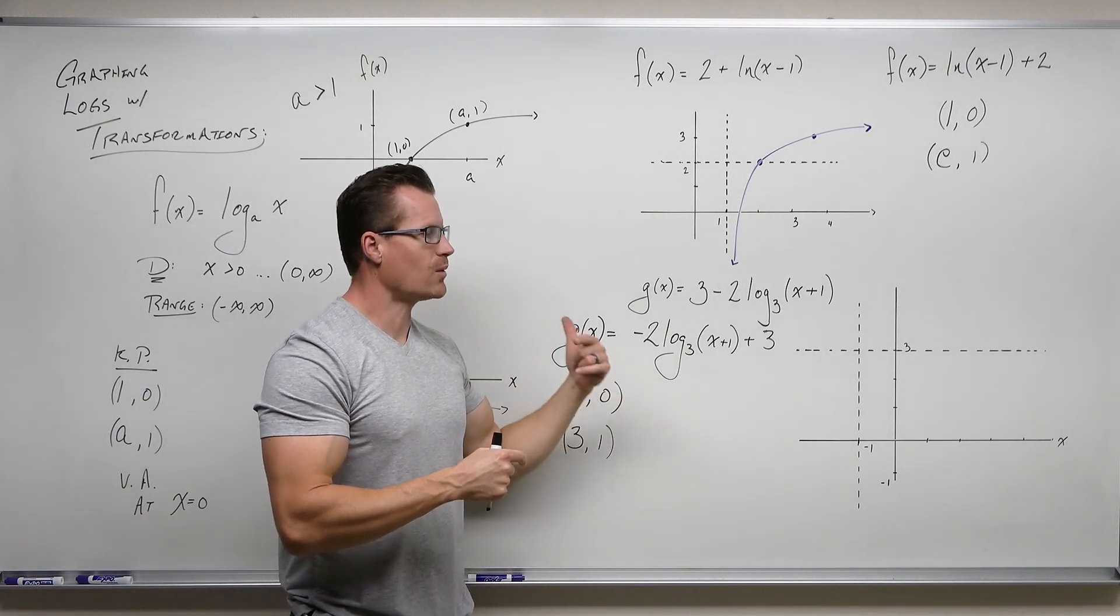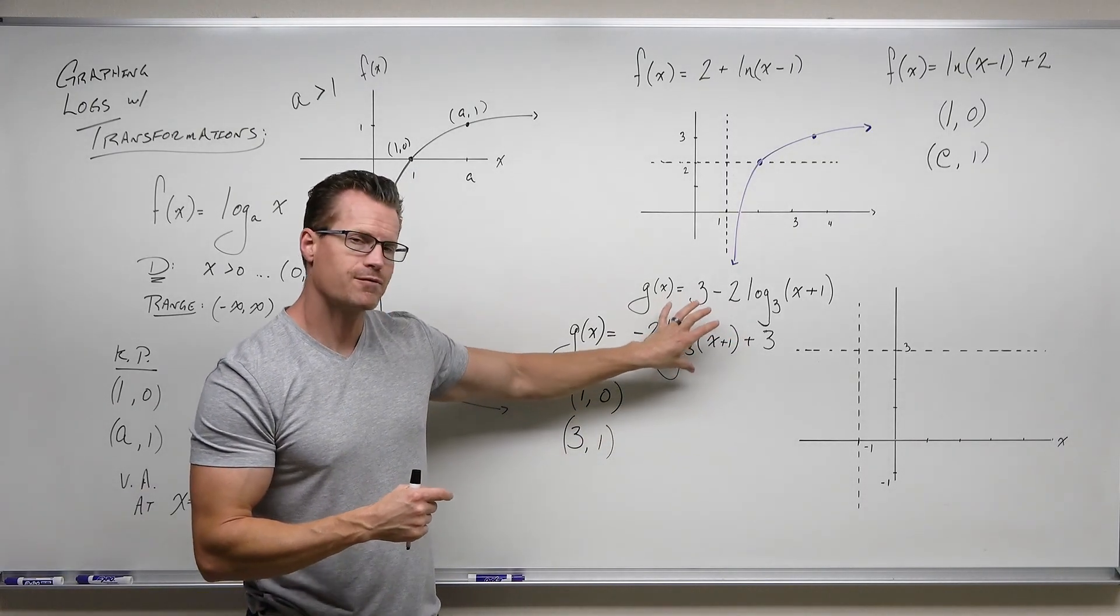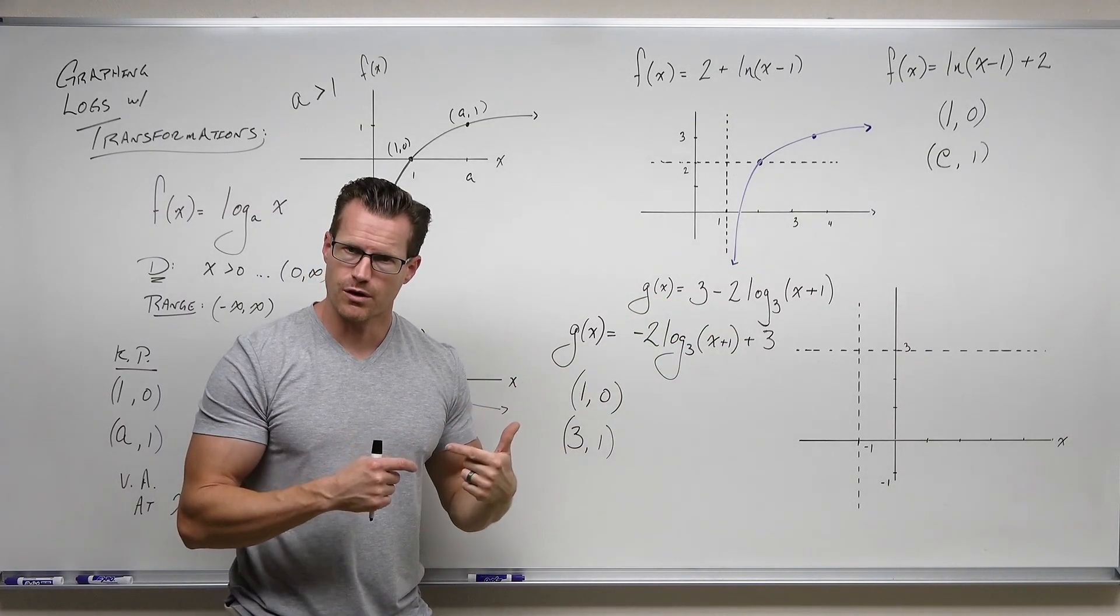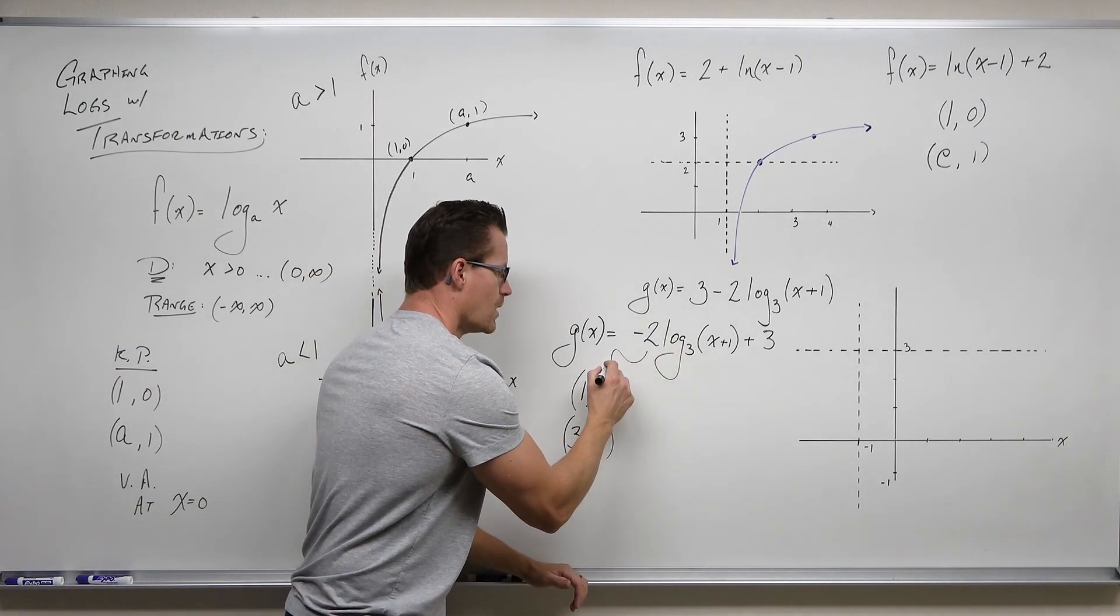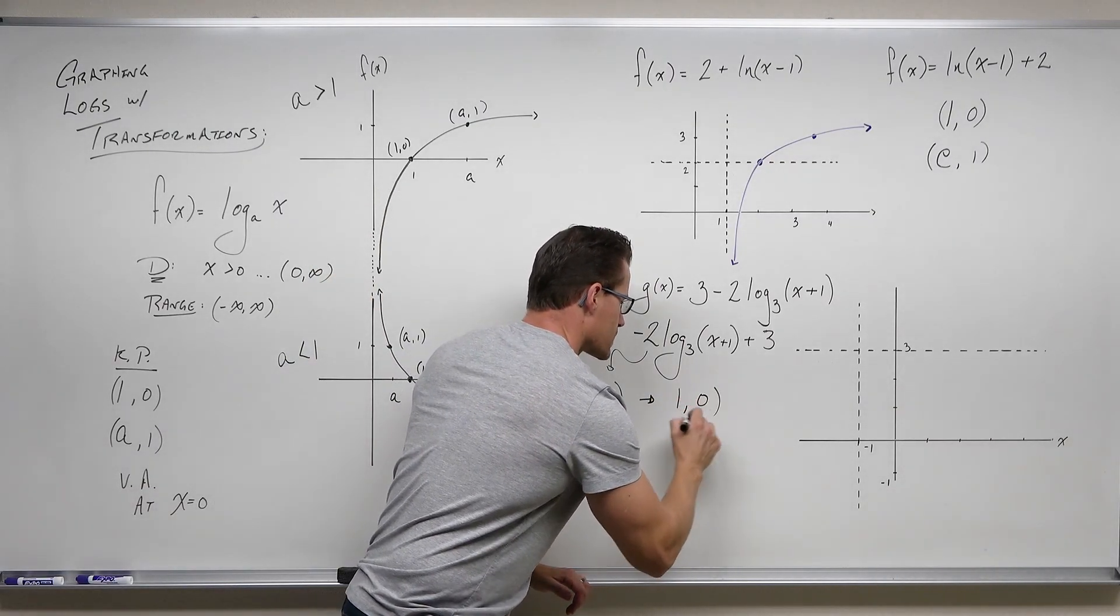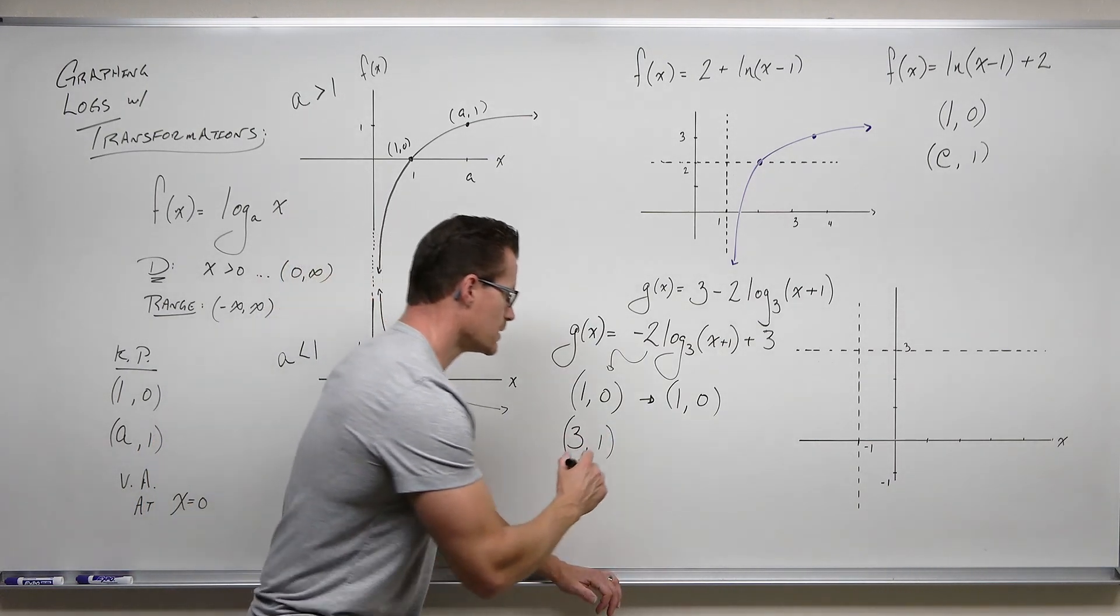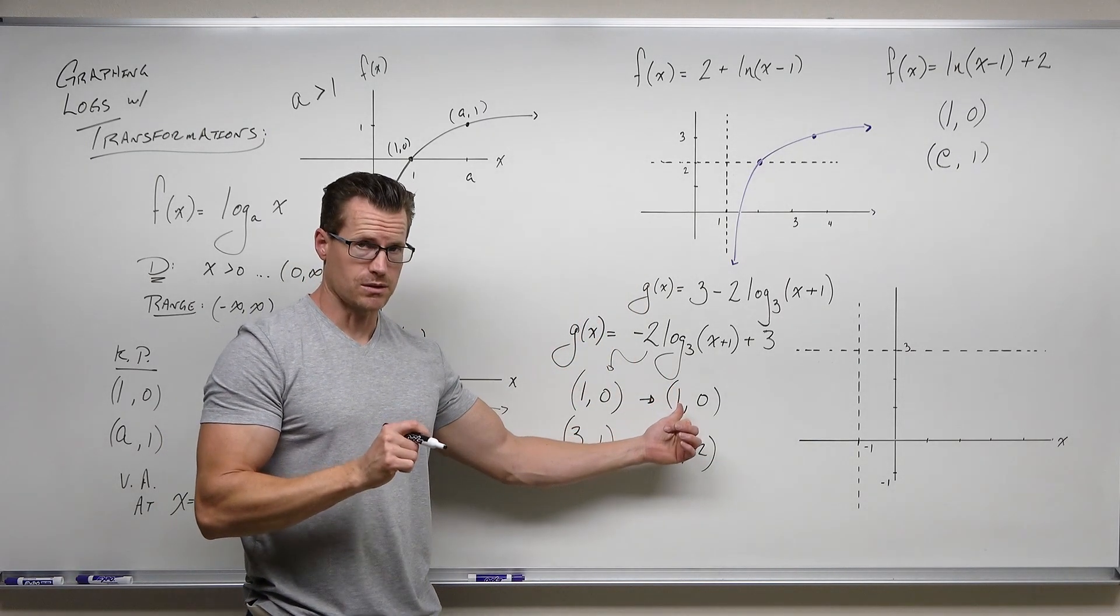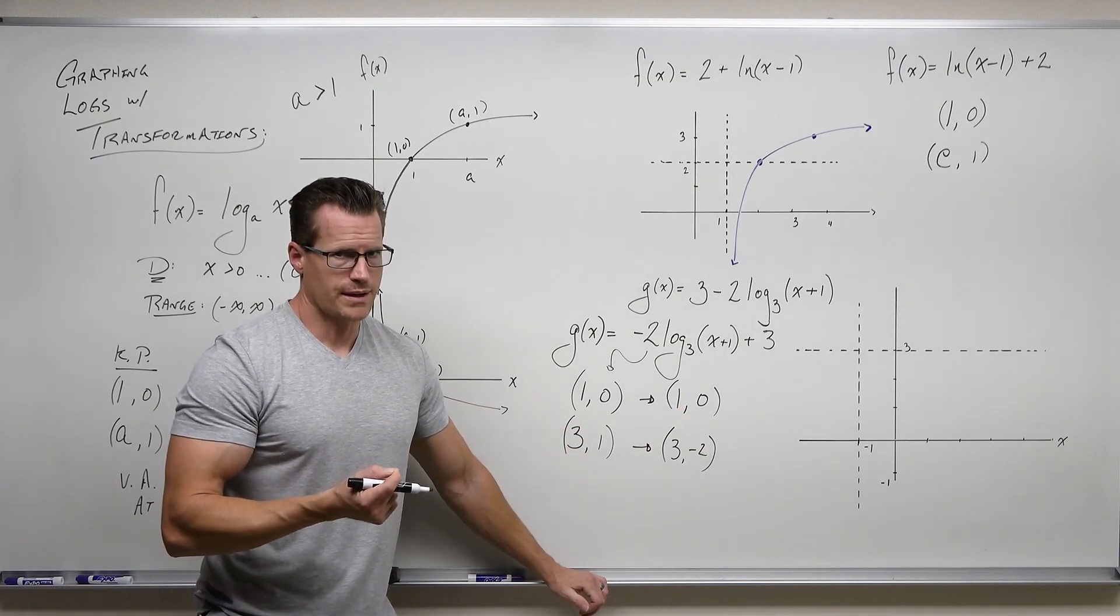Now, how we deal with that negative 2. Because this negative 2 happens after we evaluate our inputs and we run through the logarithm, it's going to affect the outputs of our logarithm. And so the outputs of our key point get affected by that negative 2. Just like every other time, we're going to multiply our outputs times negative 2. Not your inputs. Well, that doesn't do anything for 1, 0, that stays the same. But it is certainly going to multiply 1 times negative 2. So we get 1, 0 still, and then we get 3, negative 2 still. So, okay, that's fantastic.